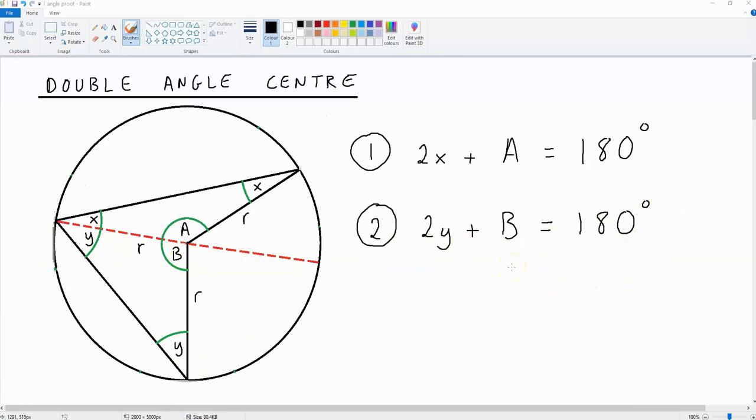Now, what makes these two equations possible is the fact that we're dealing with two isosceles triangles. As we can see, on this triangle above, we have two lengths of r, which is radius. And likewise, for this triangle below, we have two lengths of r, which is radius.